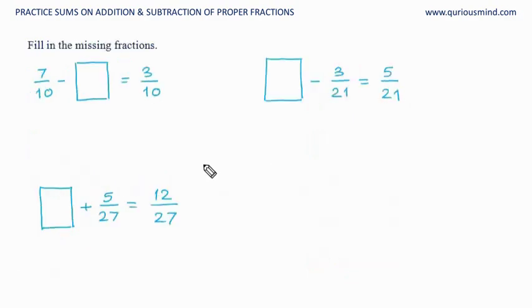Fill in the missing fractions. 7 upon 10 minus the box is equal to 3 upon 10. If you see, the answer's denominator and the denominator here matches, which means the denominator of this fraction also should be 10. Now, 7 minus something should be 3. So 7 minus how many is 3? 7 minus 4 is 3, so 4 upon 10 is the missing fraction.